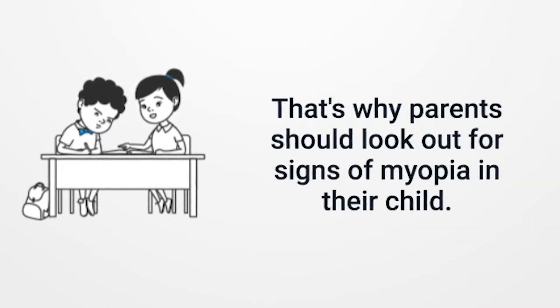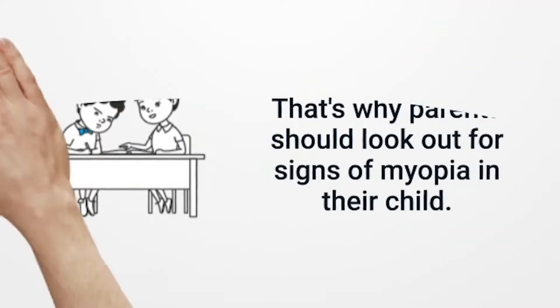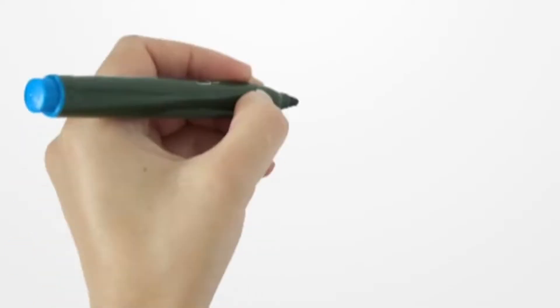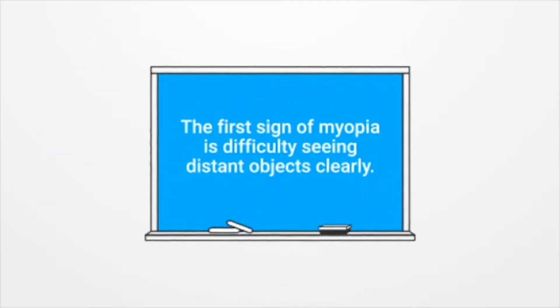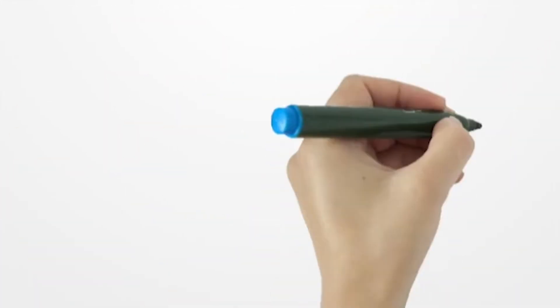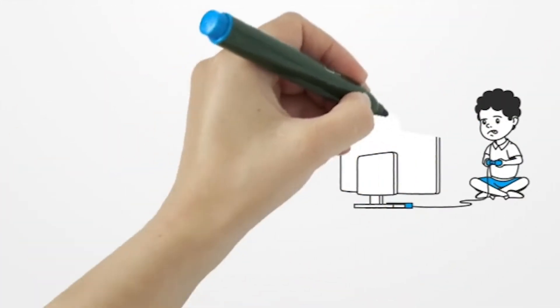That's why, as a parent, it's important to look out for signs of myopia in your child. The first sign of myopia is difficulty seeing distant objects clearly. You may notice this when your child sits too close to the TV or shows disinterest in activities that require them to focus at a distance.